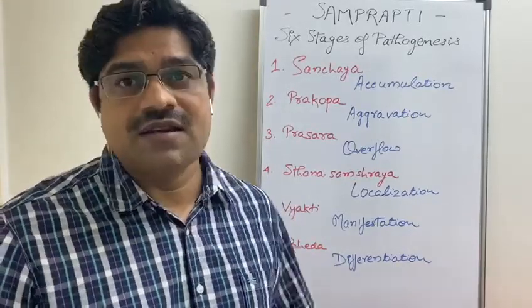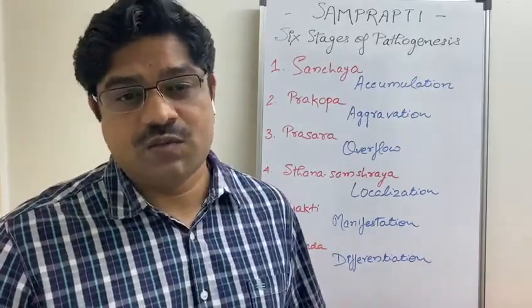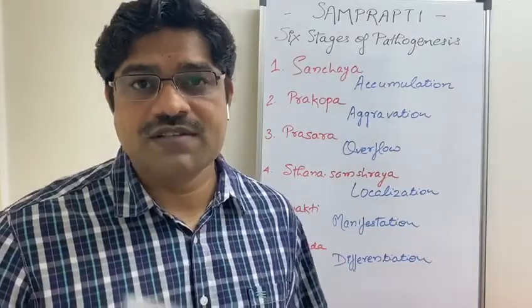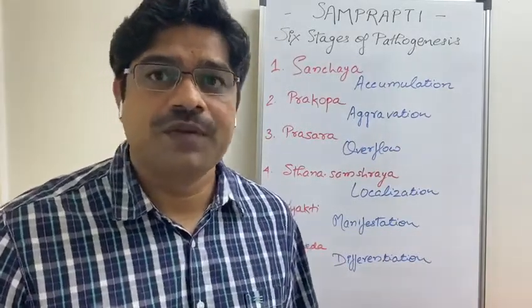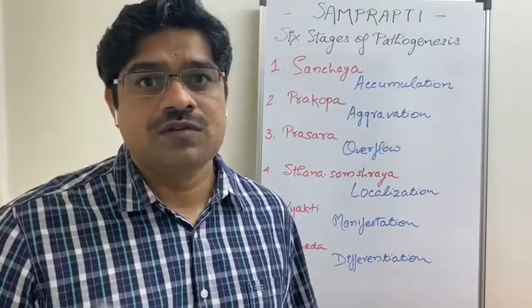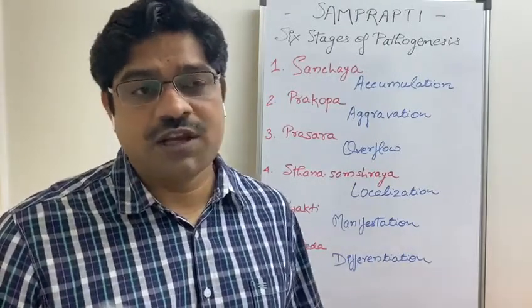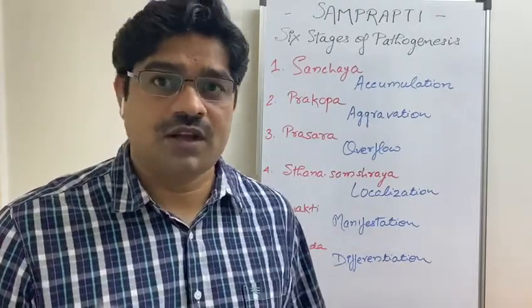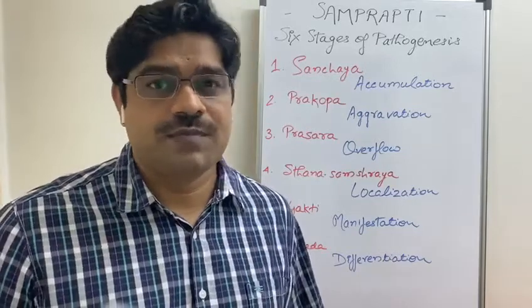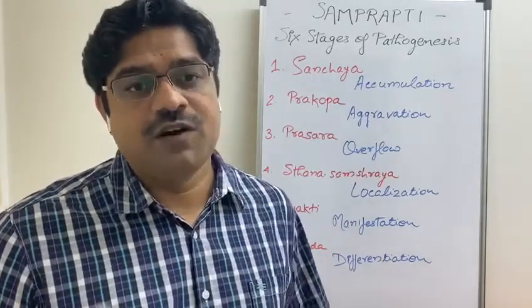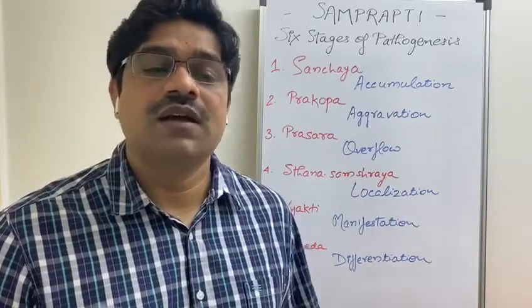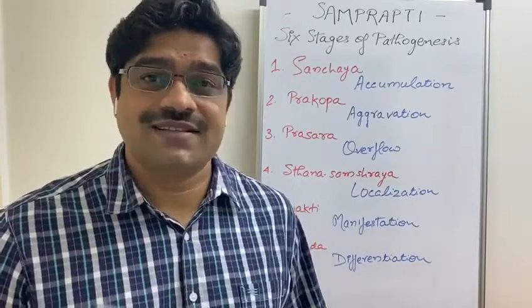Let's understand these six stages with the example of Vata Dosha. The first stage is accumulation, which is Sanchaya. The site for Vata Dosha is the colon, so if the Vata Dosha keeps on accumulating in the colon it may lead to constipation, gas, and bloating.